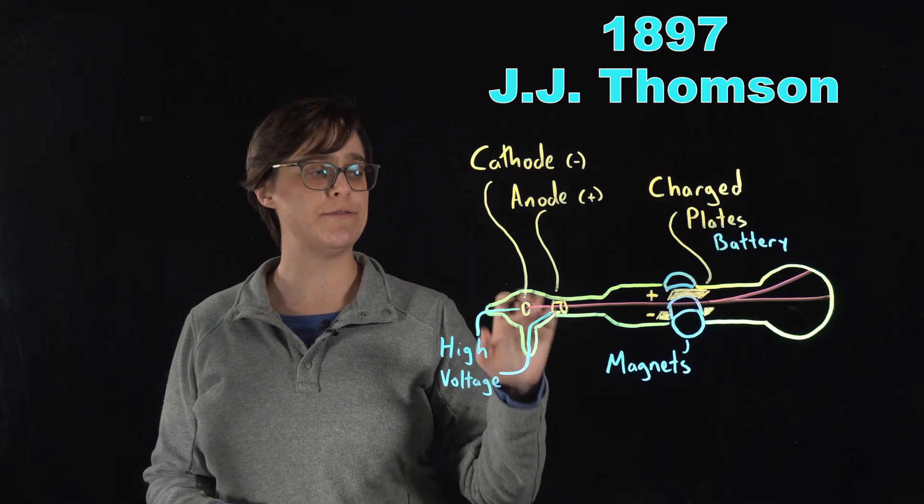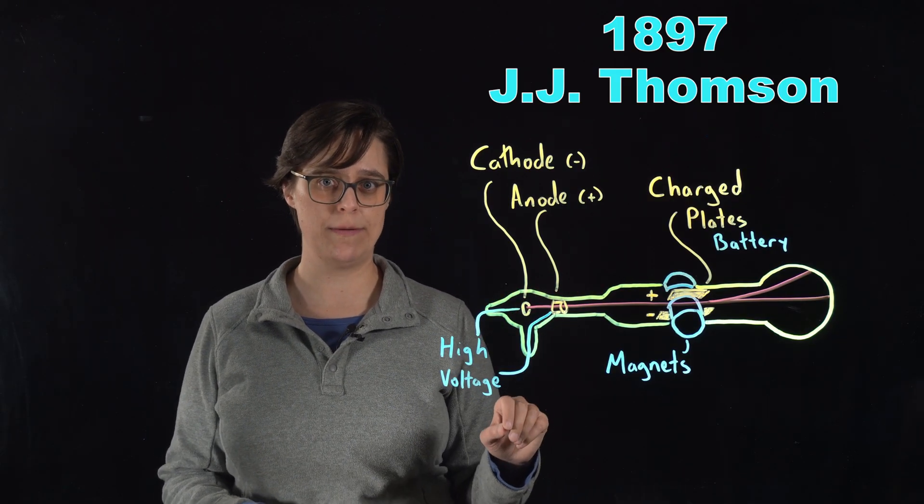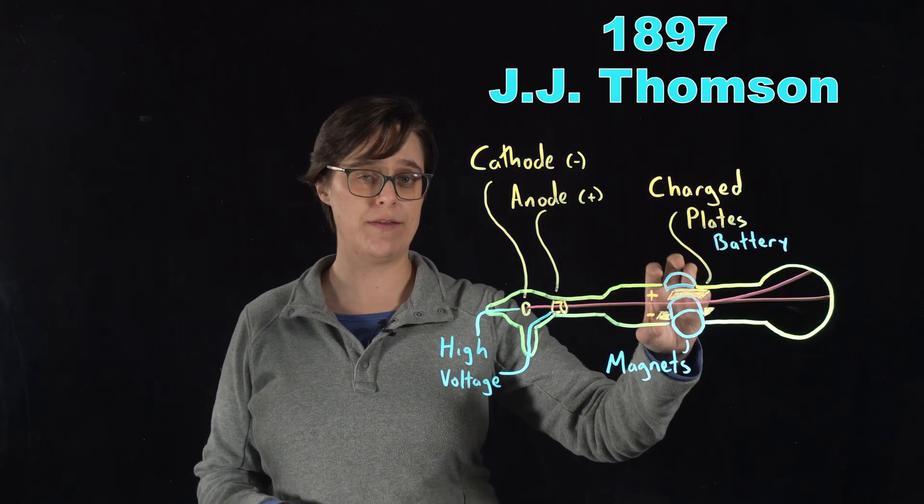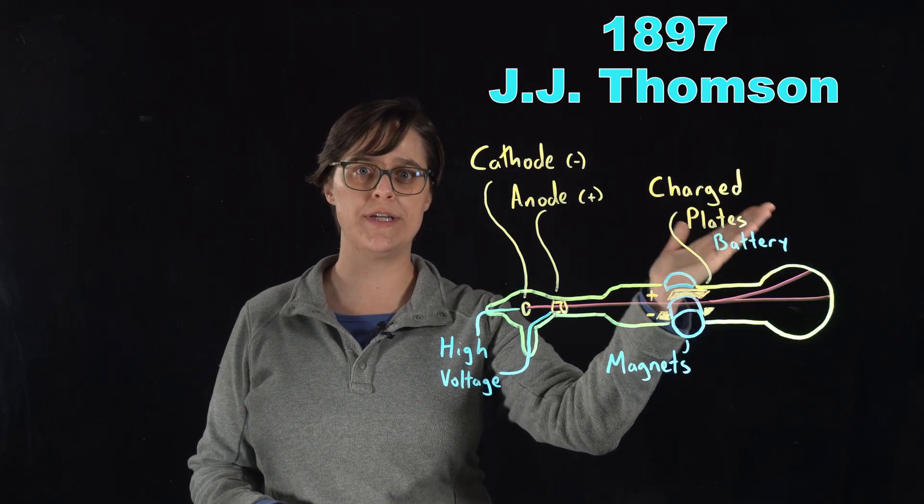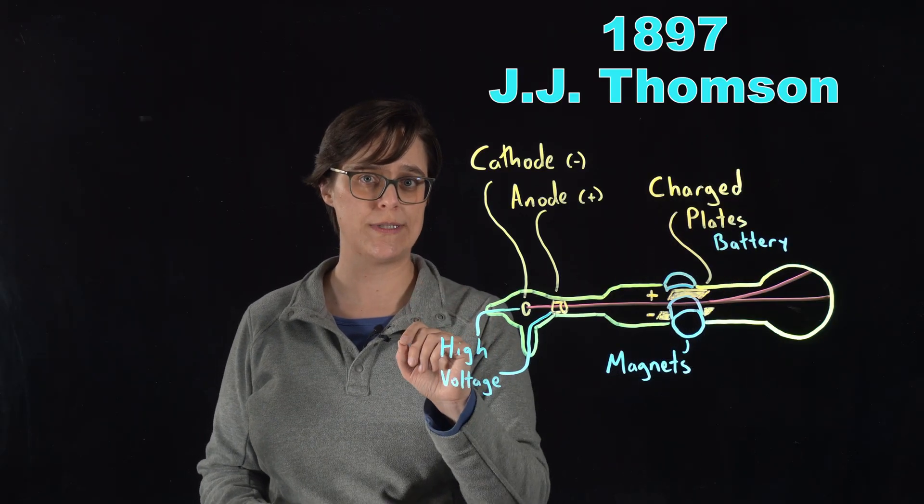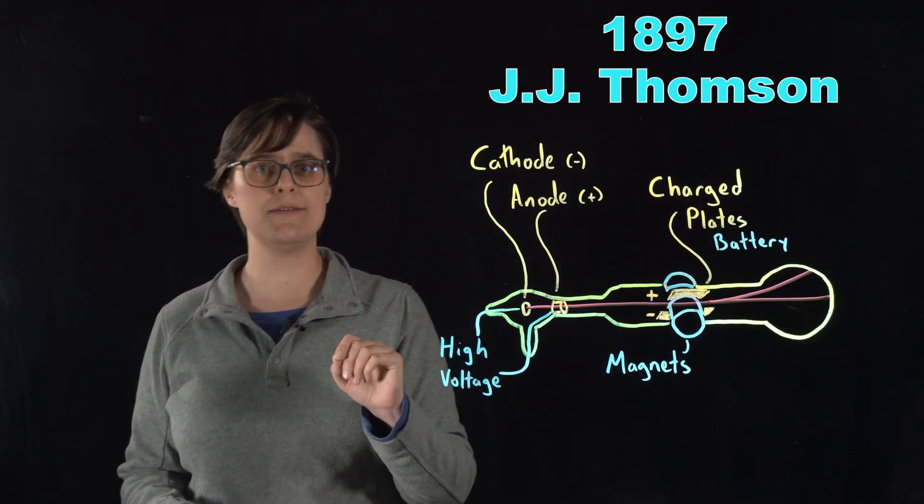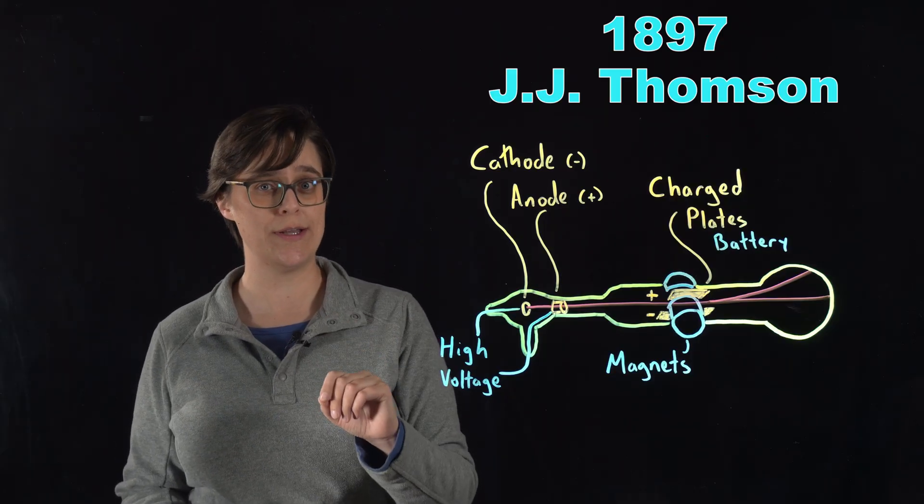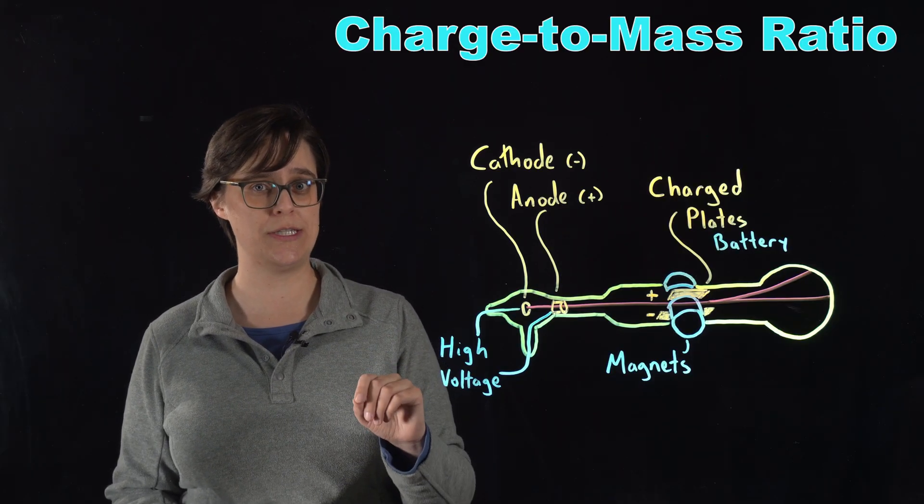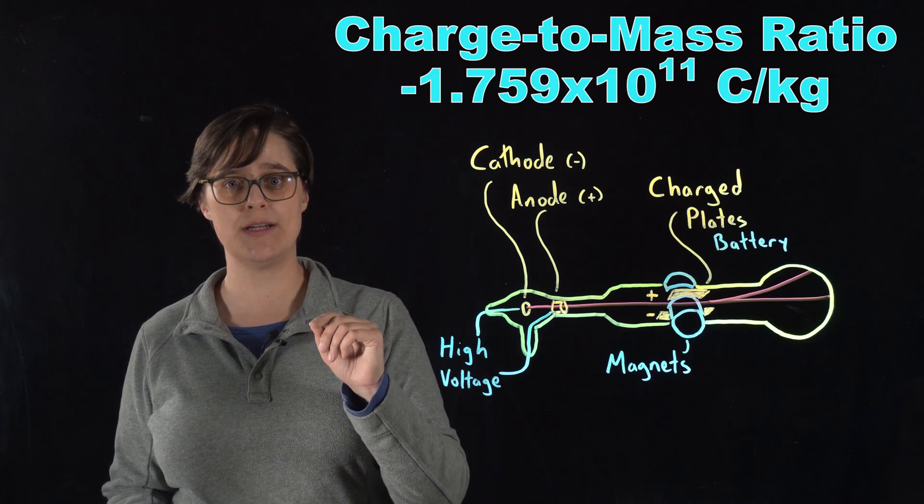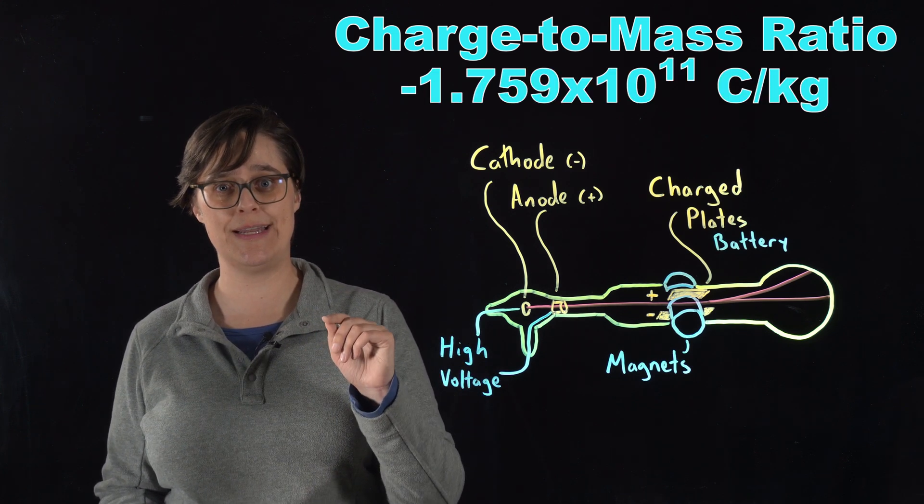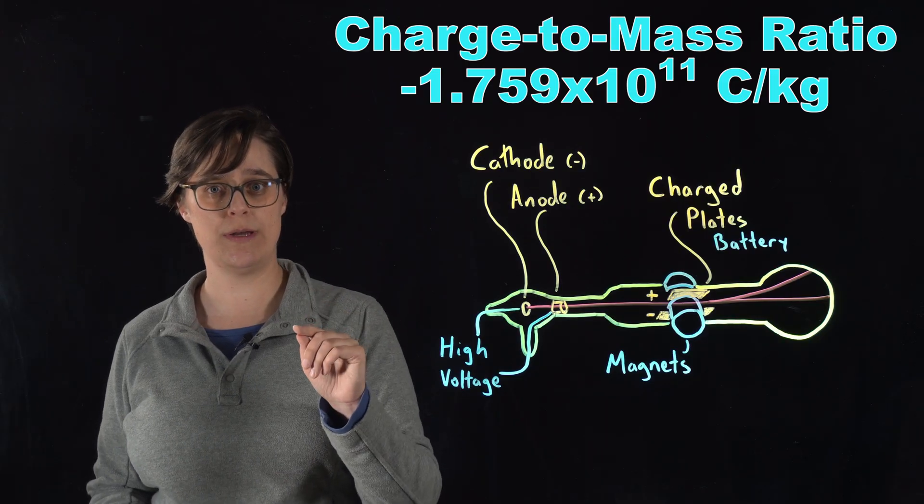In a refined version of this experiment, the strengths of the magnetic fields were carefully measured, and the extent of the deflection of the cathode ray was also measured. These values were used to calculate a charge to mass ratio of these deflected particles. And that value is negative 1.759 times 10 to the 11th coulombs per kilogram.